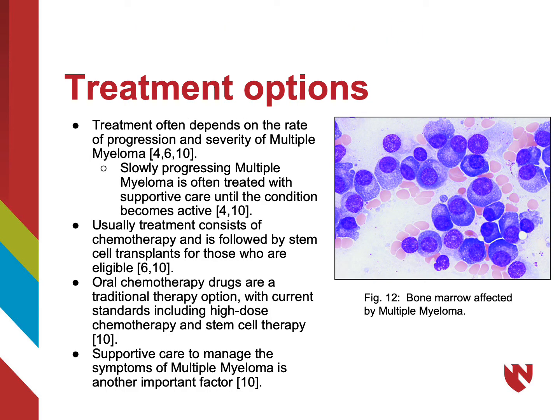Treatment options for multiple myeloma can vary depending on many factors such as the progression and severity of the disease. For example, slowly progressing myeloma is often treated with only supportive care until the condition becomes active and needs more aggressive therapy. Usually treatment involves chemotherapy and stem cell transplants if the patient is eligible. Today the standard is high-dose chemotherapy and stem cell therapy, and supportive care is utilized to treat the accompanying symptoms.